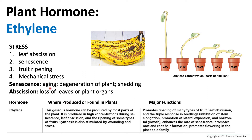That process is called leaf abscission. Once we enter those cooler environments of fall, we will begin to see a higher concentration of ethylene, which will promote the leaf abscission. Another stress a plant may experience is senescence.